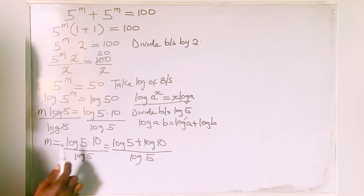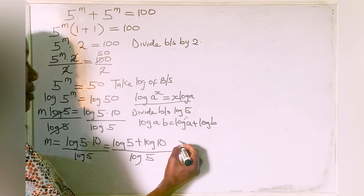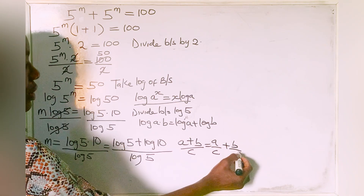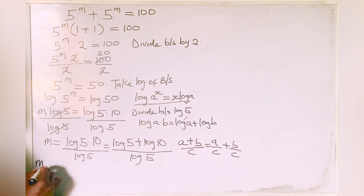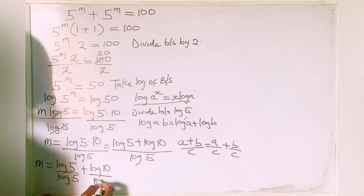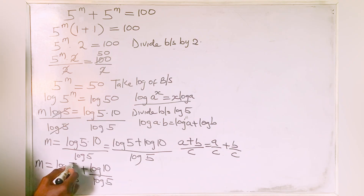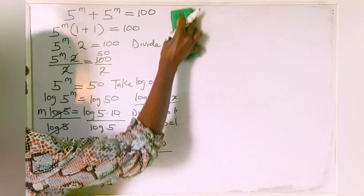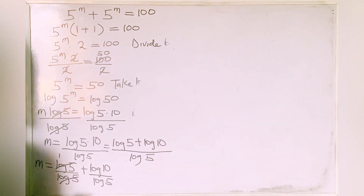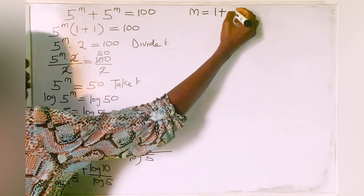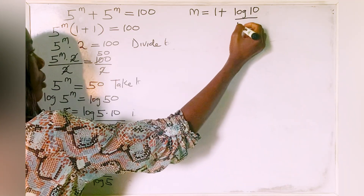So let's continue with our math. Now we have this equation. We apply the rule that a plus b over c is the same thing as a over c plus b over c. So m is equal to log 5 over log 5 plus log 10 over log 5. Now log 5 over log 5 gives us 1. So that means m is equal to 1 plus log 10 over log 5.